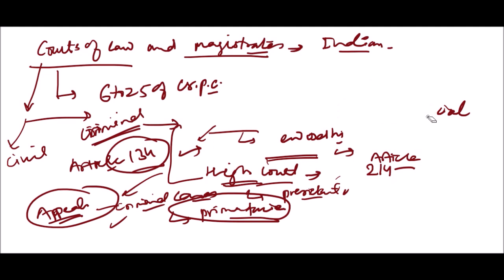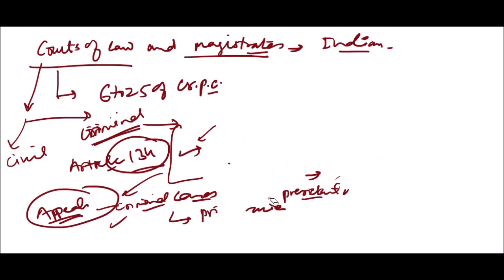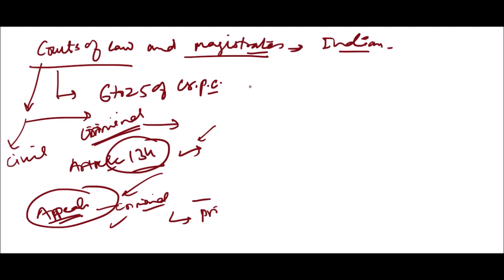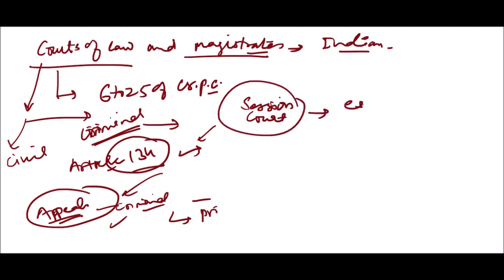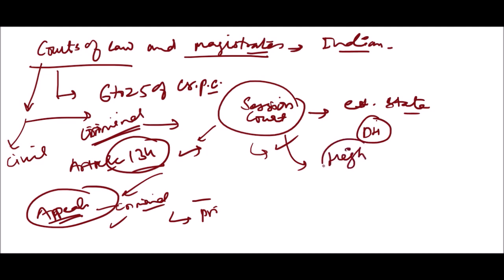The third type of court is the Session Court, which is established by the state government and is usually located at the district headquarter. It can try only cases which have been committed to it by a magistrate. It can pass any sentence authorized by law, but a sentence of death passed by it must be confirmed by the High Court.